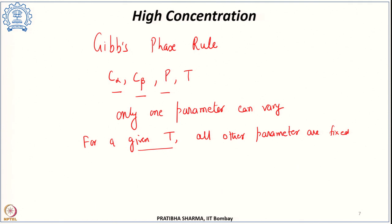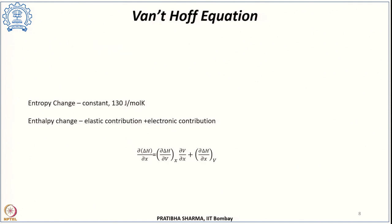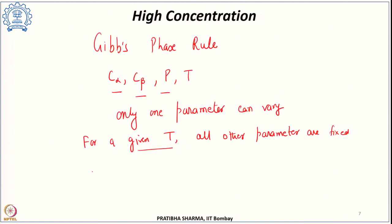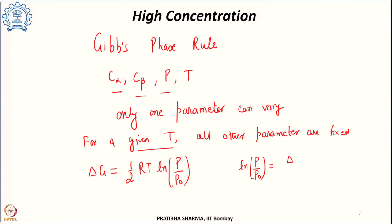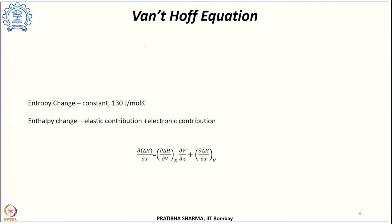Writing the change in chemical potential or Gibbs free energy in the plateau region: ΔG = ½RT·ln(P/P₀). This can also be written as ln(P/P₀) = ΔH/RT − ΔS/R, which is the well-known Van't Hoff equation.